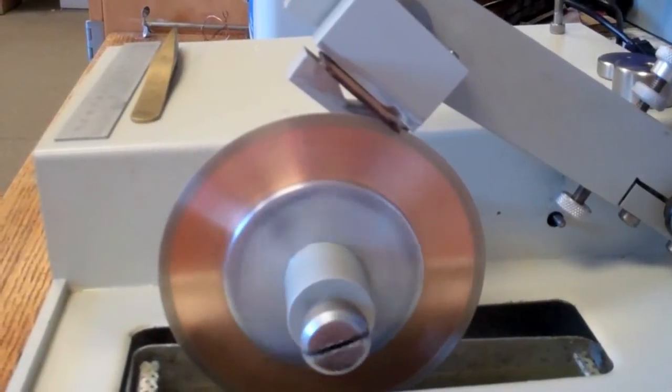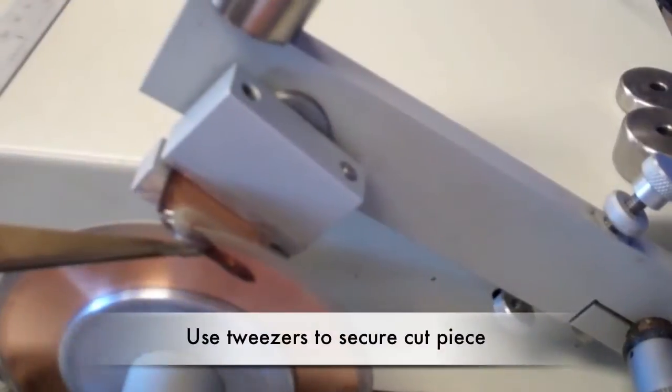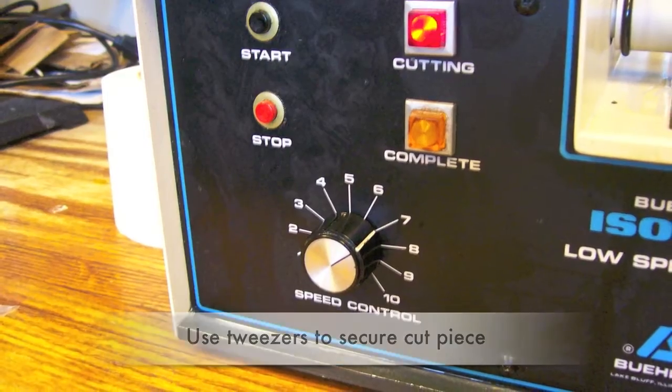Softer materials take between 30 and 90 seconds. When the cut is almost completed, use a pair of tweezers to secure the cut piece. When the cut is complete, you can stop the machine using the red stop button.